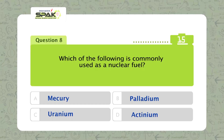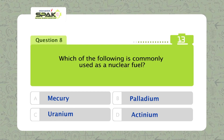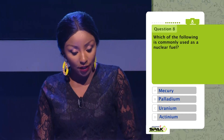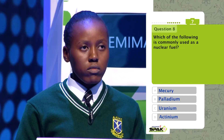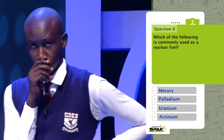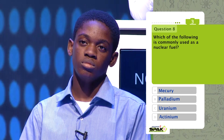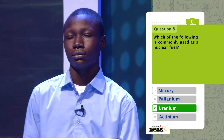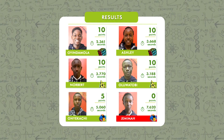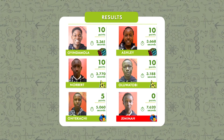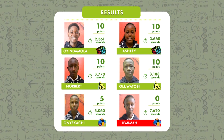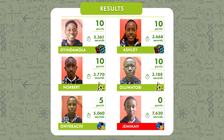Question eight: Which of the following is commonly used as nuclear fuel? Is it mercury, palladium, uranium, or actinium? The correct answer is option C, uranium. At the end of the Foundation Round, Team Edison led the scoreboard, followed by Team Pascal and then Team Newton.